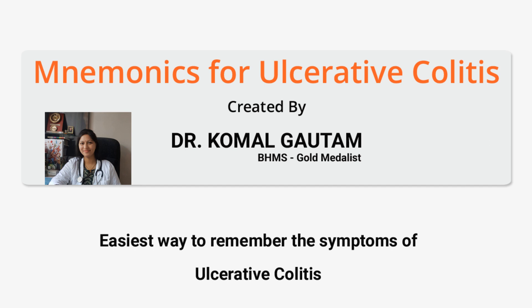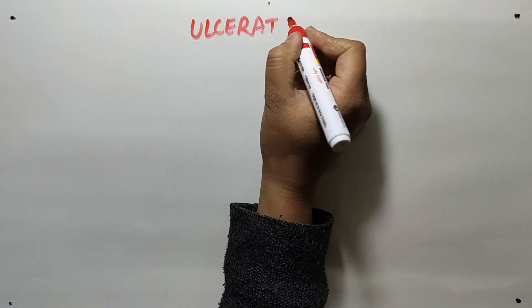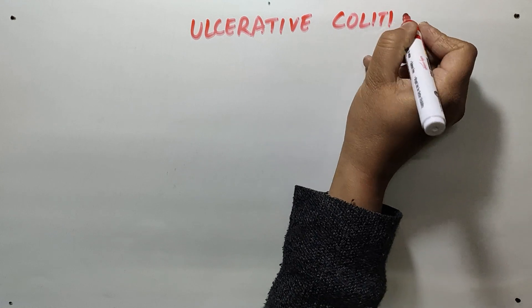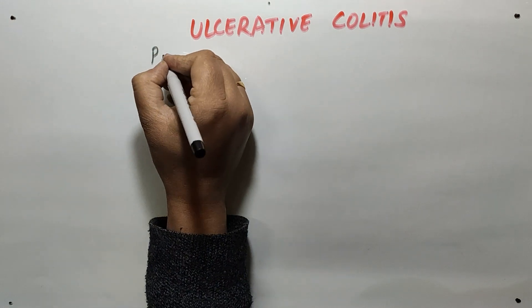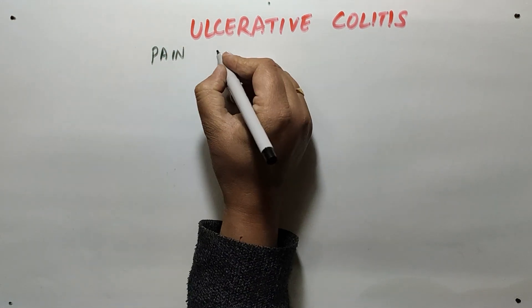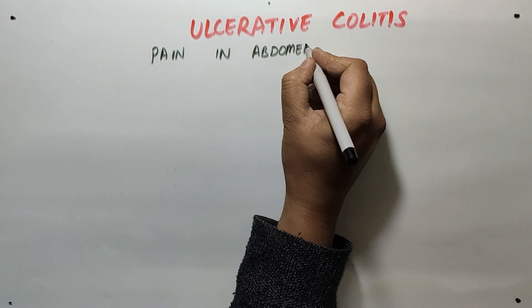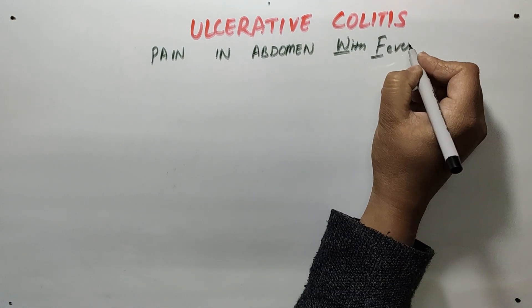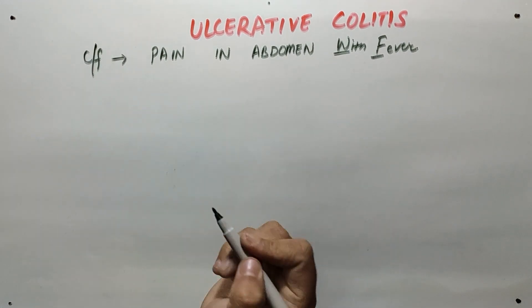Let us study about ulcerative colitis. As we all know, ulcerative colitis is the inflammation and formation of ulcers in the colon and rectum. The mnemonic I have made for ulcerative colitis is 'pain in abdomen with fever,' and this is for the clinical features.